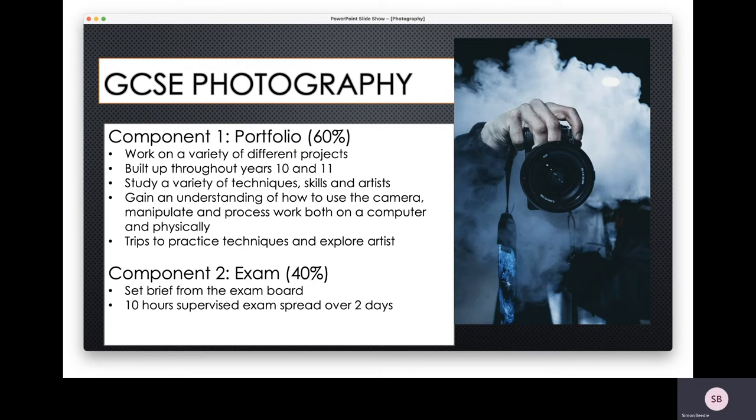That's built up through Years 10 and 11. Whilst working on those different projects, there'll be a constant buildup of skills on how to use a camera — how to take better pictures with your phone, but also how to take better pictures with a DSLR camera, which we have in school and loan out to you. We'll understand things like aperture, shutter speed, and ISO, and how those affect the quality of the image. There'll be workshops to practise those skills and build up your portfolio of photos and skills.